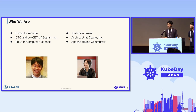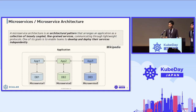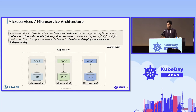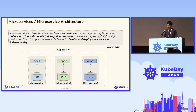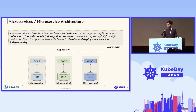Before going into the details, let's review microservice architecture. I took this from Wikipedia: microservice architecture is an architectural pattern that arranges an application as a collection of loosely coupled, fine-grained services communicating through lightweight protocols, and one of its goals is to enable teams to develop and deploy their services independently. It's a divide-and-conquer strategy for application architecture.